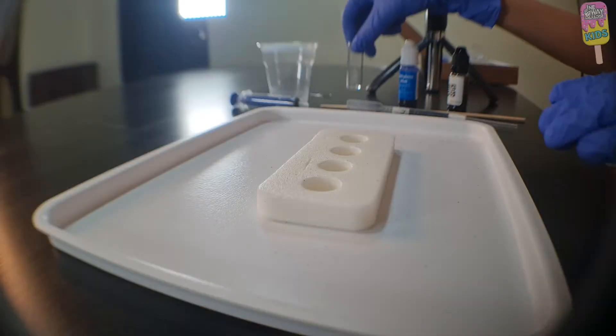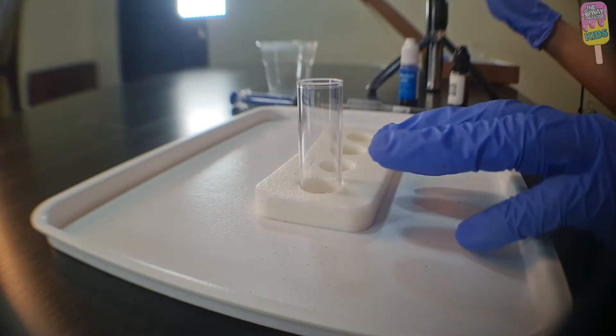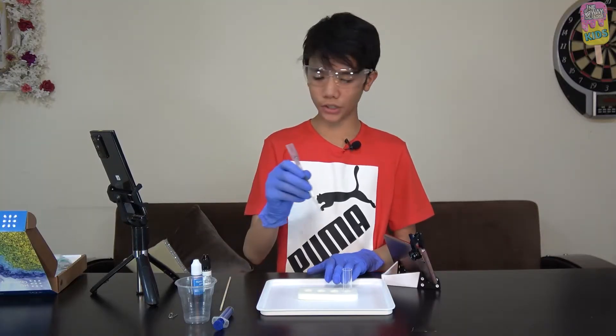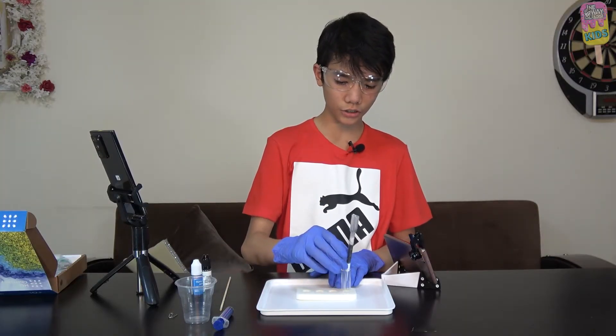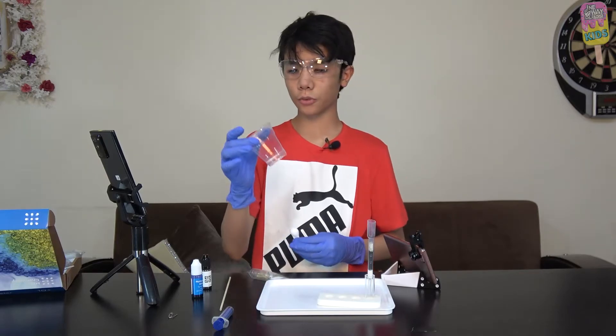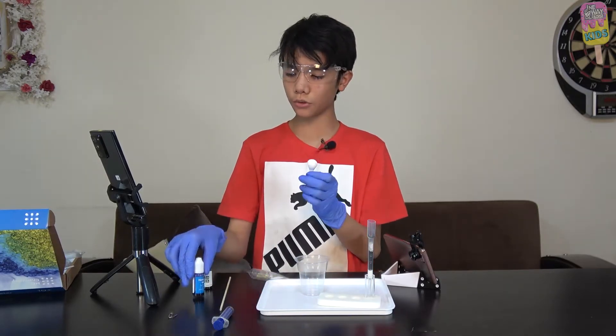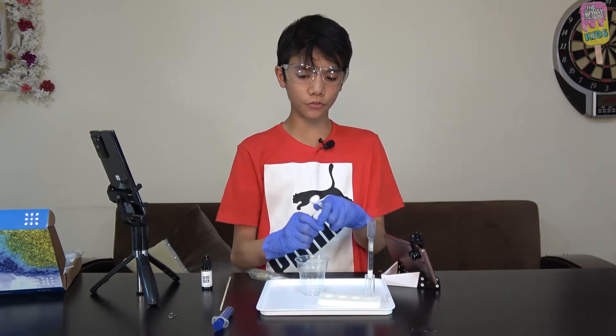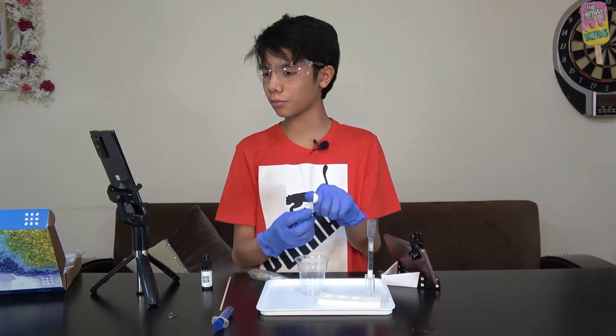I'm going to insert a plastic vial into the test stand and put the carbon filter inside just like this. Next, I'm going to get our disposable cup, the measuring spoon, and pour one big spoonful of methylene blue into the disposable cup.